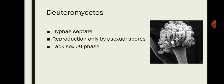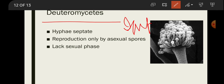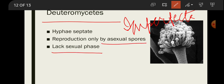In fungi, there is a reduction in sexual reproduction as we go from lower to higher classes. Earlier classes reproduce by sexual reproduction while later classes reproduce by asexual reproduction. The last class is Deuteromycetes, also called Fungi Imperfecti, because they do not reproduce by a sexual phase — only by asexual spores.